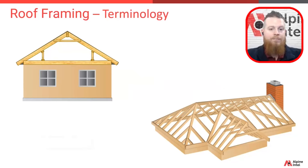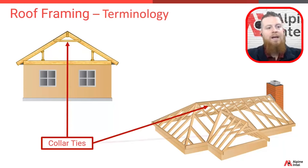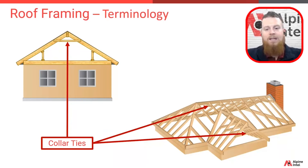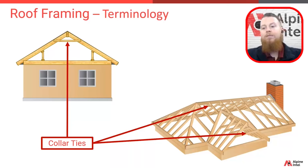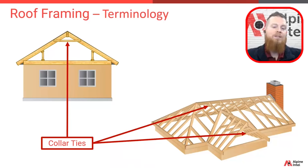Joining that is something called collar ties, and it's typically tying the rafters together from one roof slope across to the opposing side.